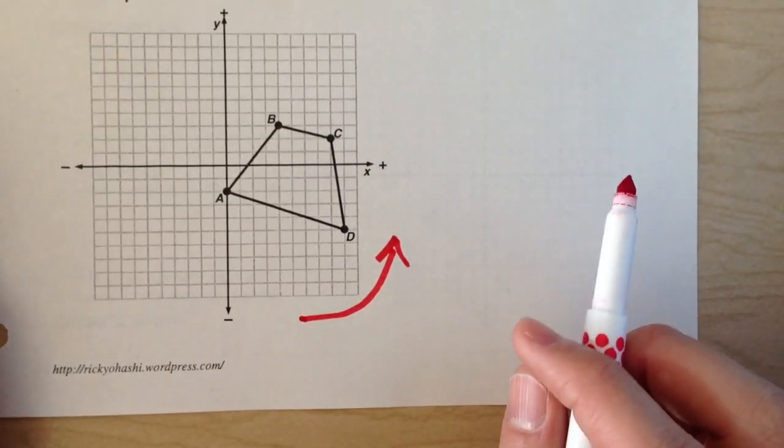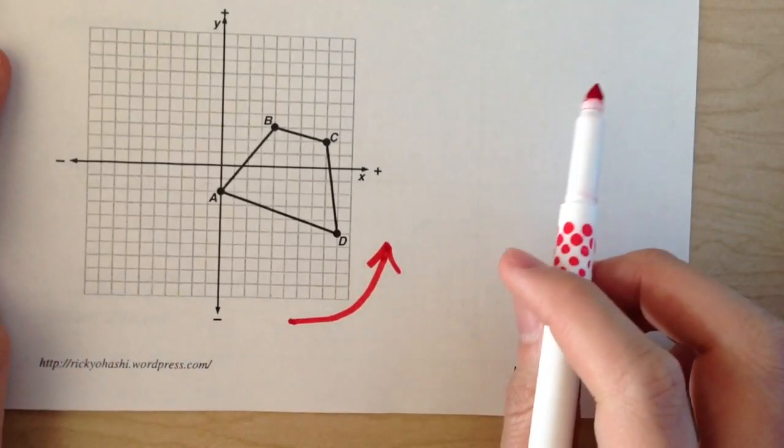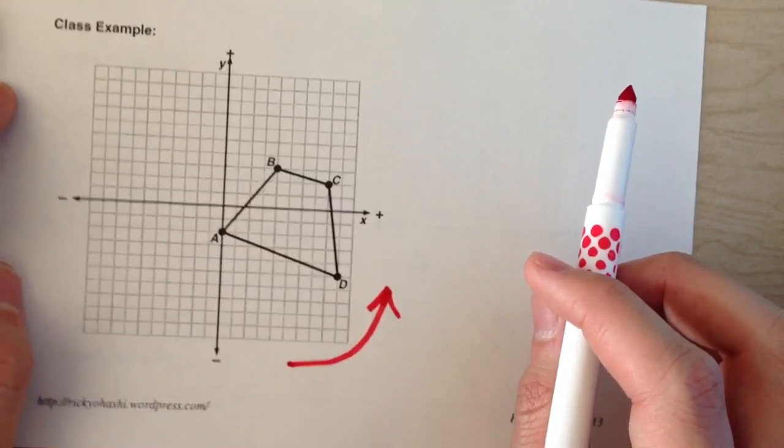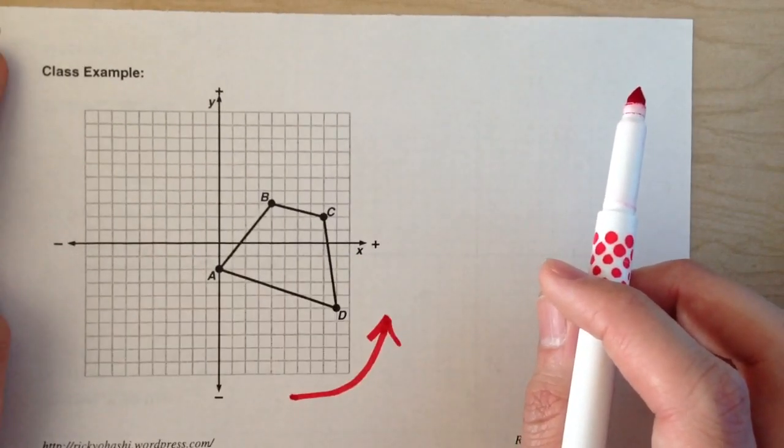Today we are learning how to rotate a shape 90 degrees counter-clockwise without relying on tracing paper. It's definitely a little tricky, however there are some tips you can use to figure it out.